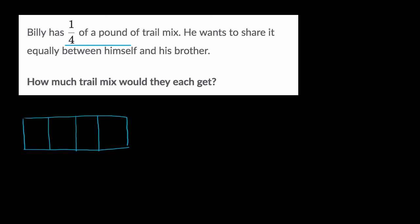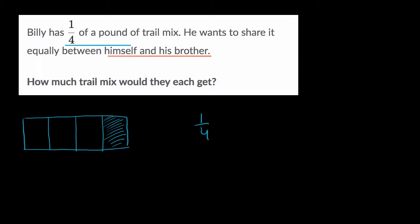So Billy is starting with a fourth of a pound. Let's say that is the fourth of a pound that he starts with. And he wants to share it equally between himself and his brother — equally between two people. So what we want to do is start with our total amount of trail mix and divide it into two equal shares. We're really trying to figure out what is one-fourth divided by two.